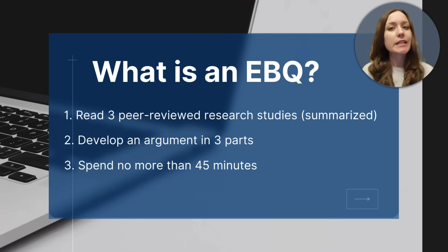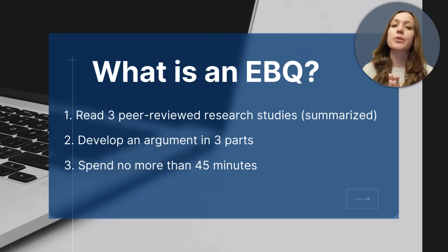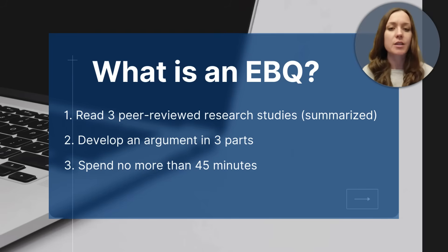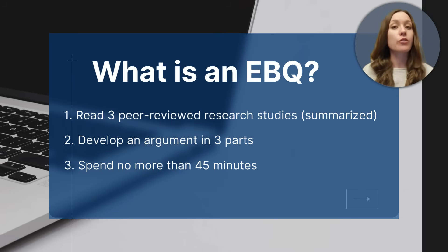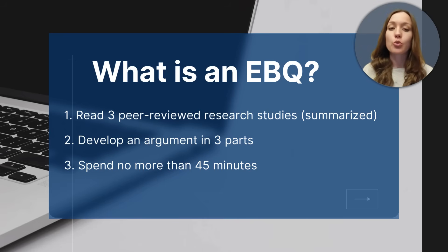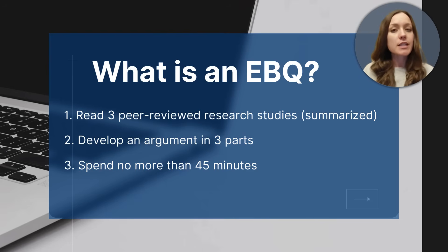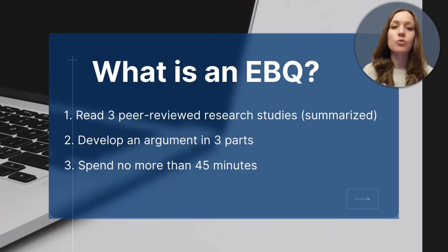So first, what is an EBQ? Well, an EBQ will ask you to read three peer-reviewed research studies that have been summarized and abbreviated. Then you will need to develop an argument in three parts, and you're expected to spend no more than 45 minutes on this portion. The CED recommends students spend about 15 minutes reading the three sources and then using the remaining time to develop the argument.